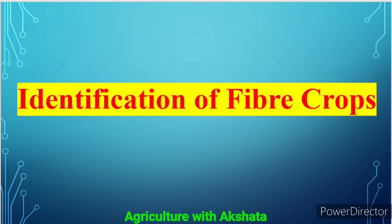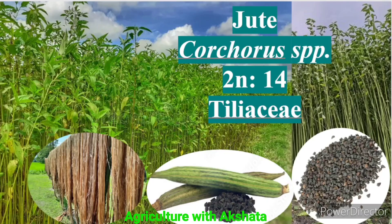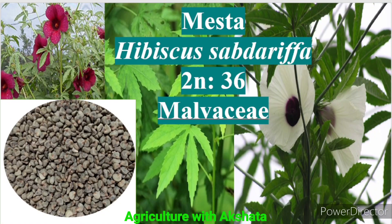Castor: Ricinus communis, 2n = 20, Euphorbiaceae family, origin Ethiopia. Now let us see some fiber crops. Cotton: there are mainly four cultivated species — Gossypium herbaceum, G. arboreum, G. barbadense, and G. hirsutum — 2n = 52, Malvaceae family, origin India. Jute: Corchorus species — two cultivated species, Corchorus capsularis and Corchorus olitorius, 2n = 14, Tiliaceae family. Sunn hemp: Crotalaria juncea, 2n = 16, Tiliaceae family. Mesta: Hibiscus sabdariffa, 2n = 36, Malvaceae family.